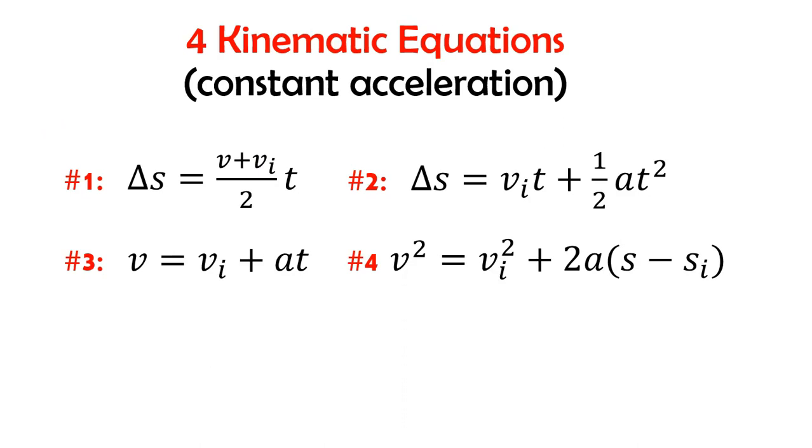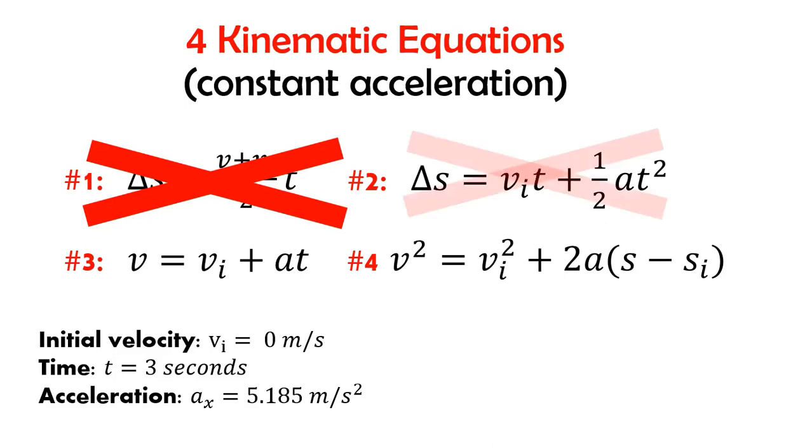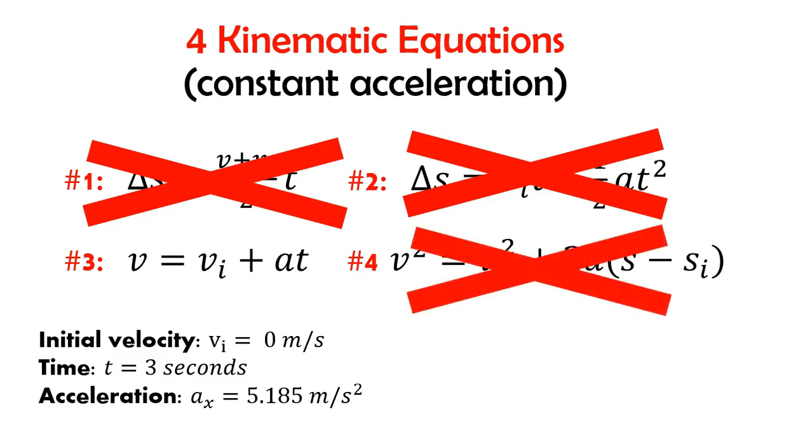All right, so now that we've got an acceleration, we've got a time frame that we're looking at, and we have an initial velocity. So now we've got to decide which one of our four kinematic equations are suitable. Well, let's just eliminate the ones that aren't. We don't have to worry about any displacement, so we can eliminate number one. Number two has a displacement, which we don't really worry about, so we take rid of that. And number four is the same thing, so let's get rid of that.